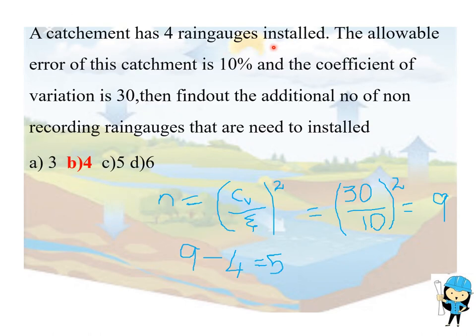A catchment has four raingauges installed. The allowable error of this catchment is 10% and the coefficient of variation is 30. Then find out the additional number of non-recording raingauges that need to be installed. We already know the formula: number of raingauges equals coefficient of variation divided by error in percentage, the whole squared.